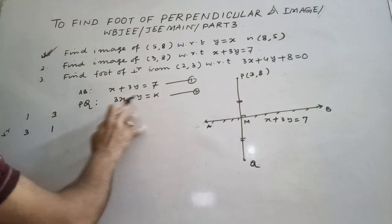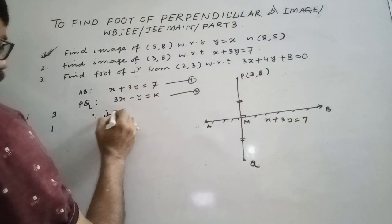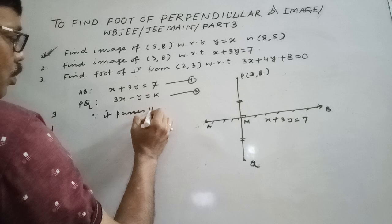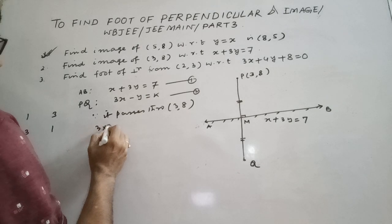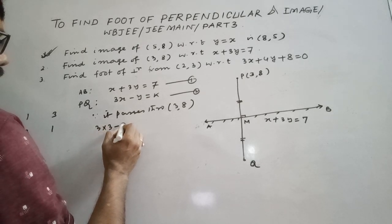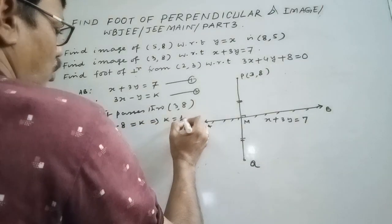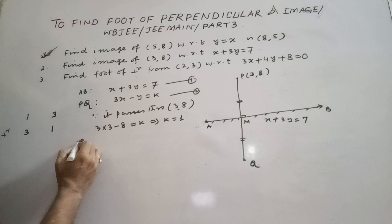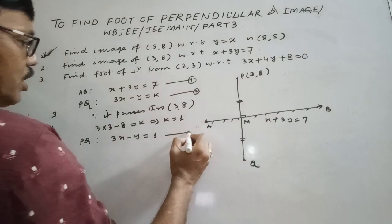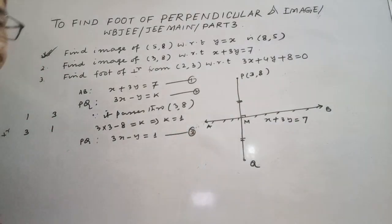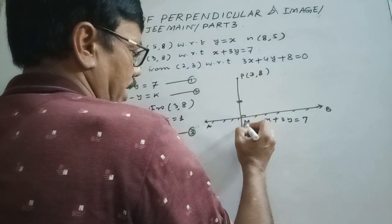To find k, use the condition that PQ passes through point (3, 8). So 3×3 − 1×8 = k, which gives k = 1. Therefore PQ is 3x − y = 1. Now solving PQ and AB — equations 1 and 3 — we get M, the foot of perpendicular.